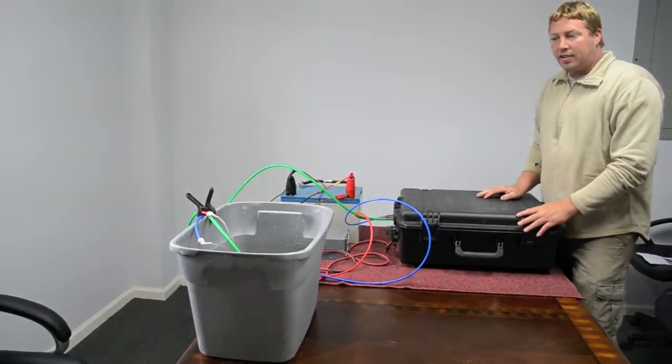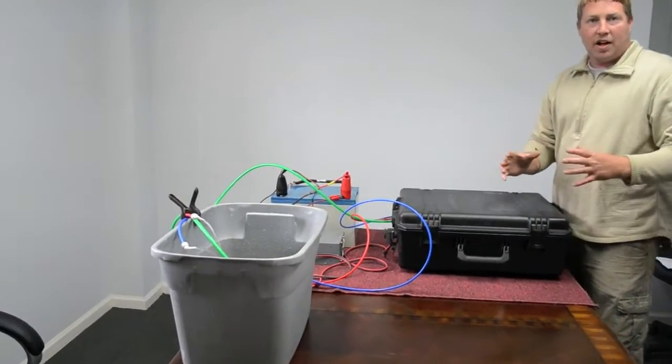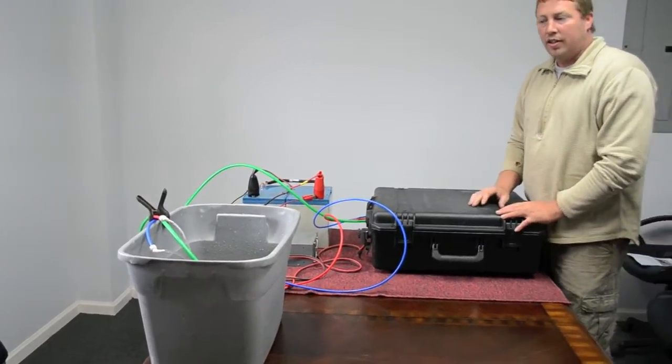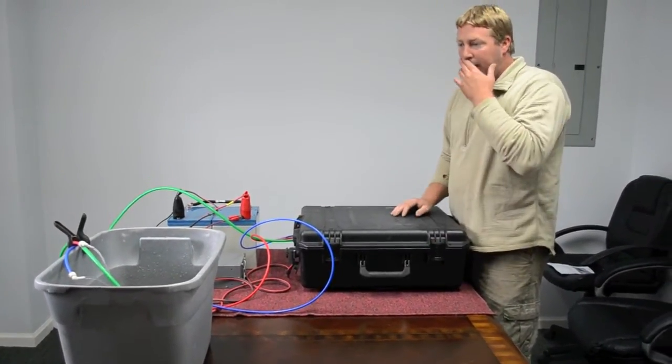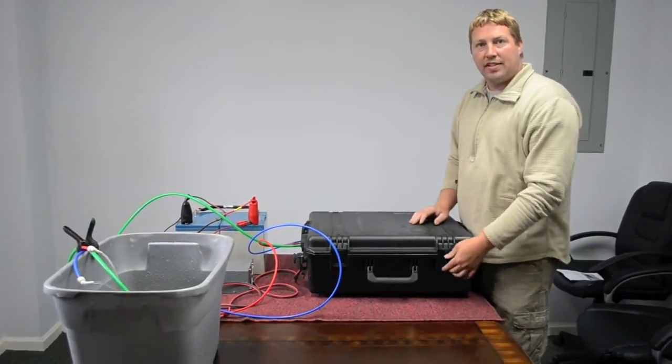When you're ready to shut the unit down, you're going to make a separate container of fresh water as per what you're using. And you're going to cycle that fresh water through the unit just to clean the unit down. Now I'm just going to back the pressure off and shut it down.